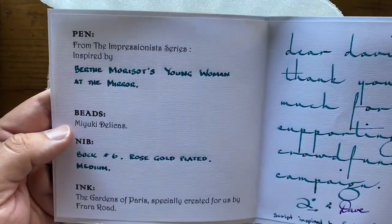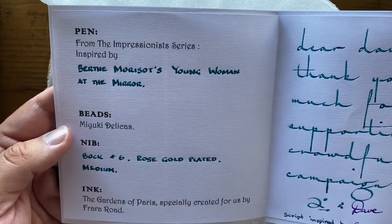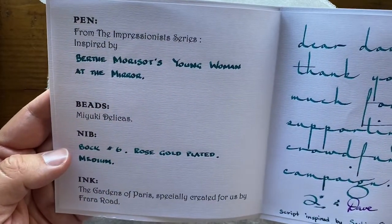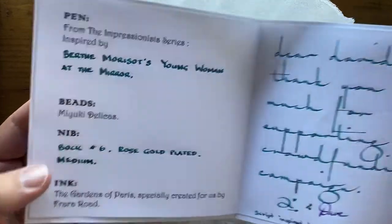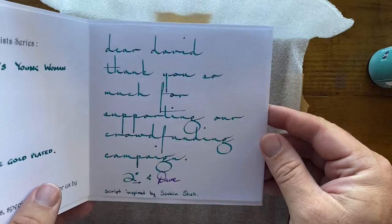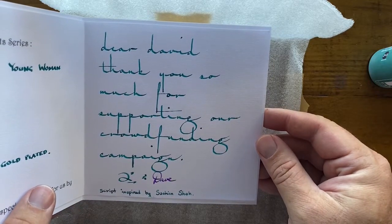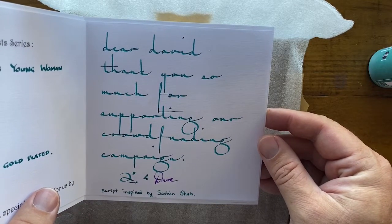This is the Impressionist series specific for this pen, Young Woman at the Mirror. You'll see that there are beads on the pen, and we got a Bock number six rose gold plated medium nib. That's some nice handwriting there, Diane. Thank you so much for supporting our crowdfunding campaign.